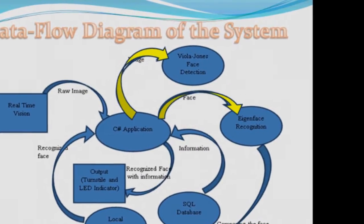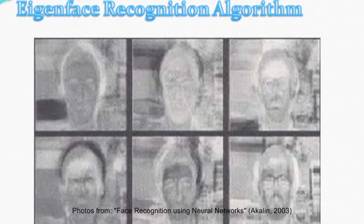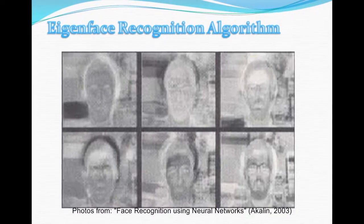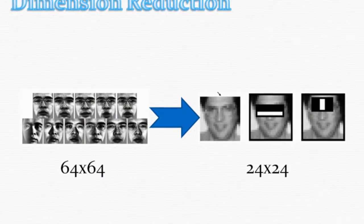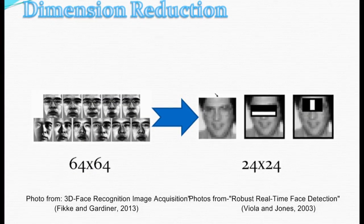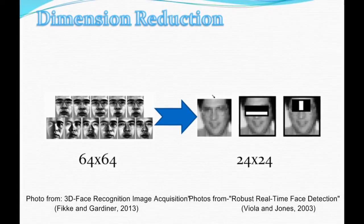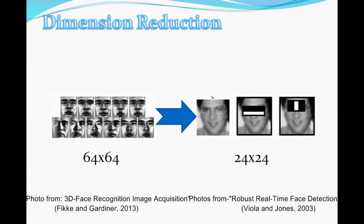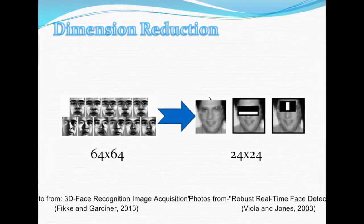Once a face is detected, the recognition process is next, using the Eigenface Recognition Algorithm. Eigenface forms a basis set of all images used to create a covariance matrix. With this construction, dimension reduction is produced, allowing a smaller set of references to represent the original training set. Eigenface has advantages over other techniques, which include speed, systems, and efficiency.